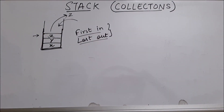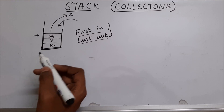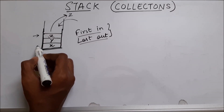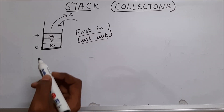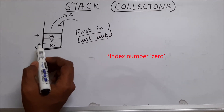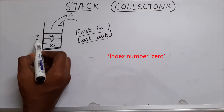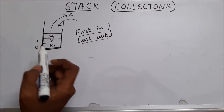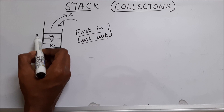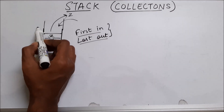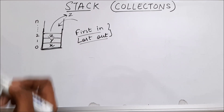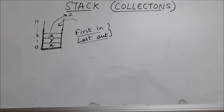I hope you are clear with this. Now let's talk about indexes. The first element which went inside the stack will have the index number one, and on top of that it will be index one, two, and so on till the last element present in the stack.